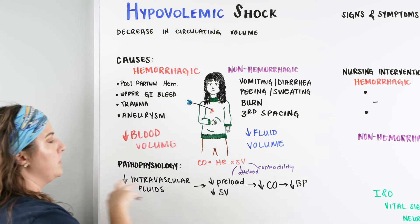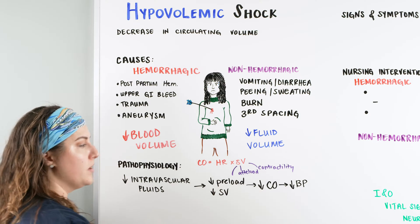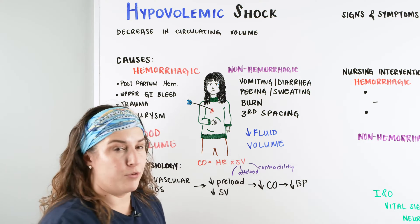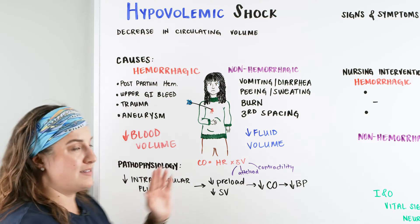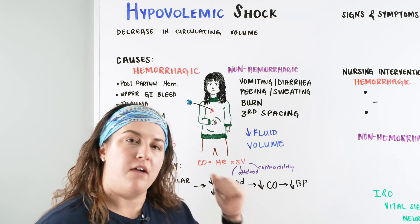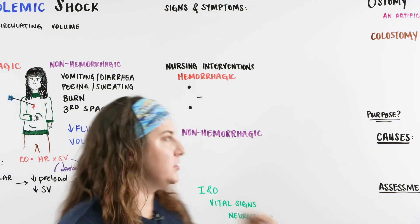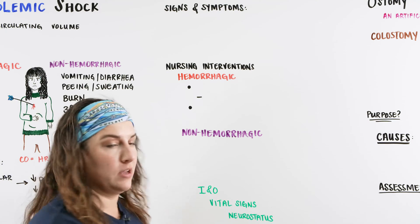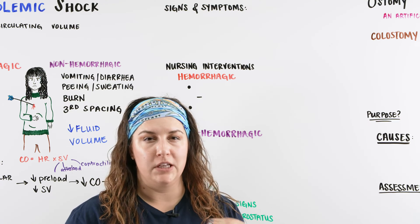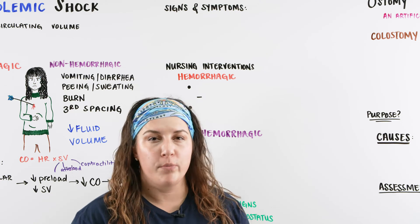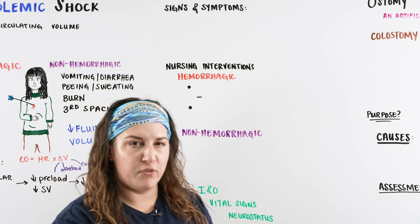So now that we understand the pathophysiology — the decrease in fluids causing a decrease in preload and stroke volume, causing a decrease in cardiac output, and then causing hypotension — let's talk about the signs and symptoms. We're going to be talking generally about hypovolemic shock. For the purposes of the NCLEX, you don't necessarily have to know all the stages; you just need to see hypovolemic shock as its whole.